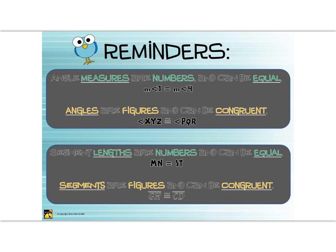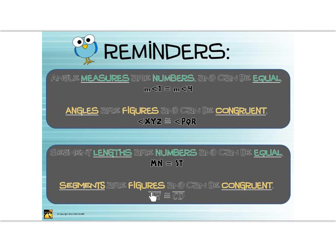A few important reminders: angle measures are numbers and can be equal; angles are figures and can be congruent. Notice we drop the M notation when talking about congruence — when we talk about measure, we use equality. The same is true for segments: lengths are numbers and can be equal, so we write the length of MN equal to the length of ST with no bar above. Segments are figures and have congruence, so we name them with a bar and say congruent — for example, segment GH is congruent to segment CD.